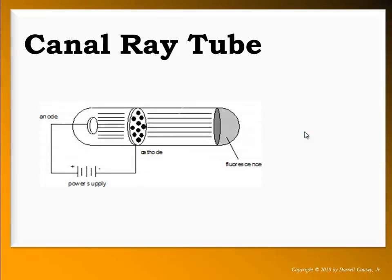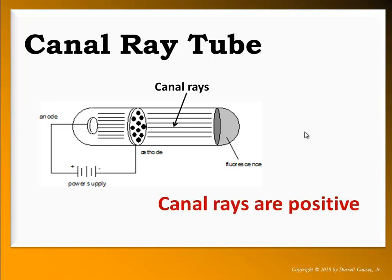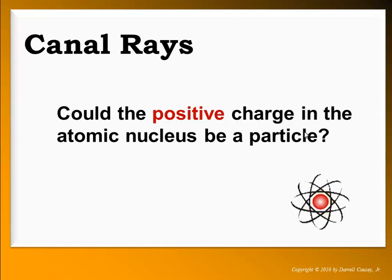The proton was discovered by working with canal ray tubes. Eugene Goldstein recognized that canal rays were just the opposite of cathode rays — rays coming from the anode rather than the cathode. They determined these rays were positive, which made sense: canal rays would be positive if cathode rays were negative. Scientists believed nature is balanced, so if there was a negative particle, there needed to be a positive particle also. They realized the canal rays were positive and asked: could this positive charge be a particle in the nucleus?